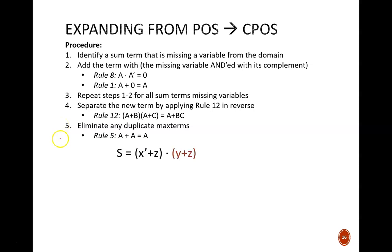Let's look at the standard POS example of s equals (x' or z) ANDed with (y or z). We first note that the domain is three variables: x, y, and z. The first sum term is missing a y, so we add y and y' into the sum term. Similarly, the second sum term is missing an x, so x and x' gets added into it. This is akin to adding zero to a numeric algebraic expression. I placed these new additions where I did just to maintain alphabetic order.